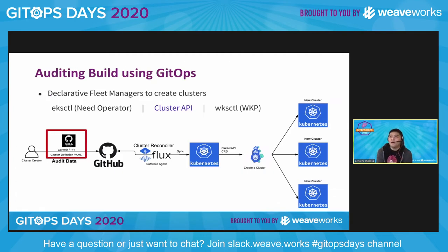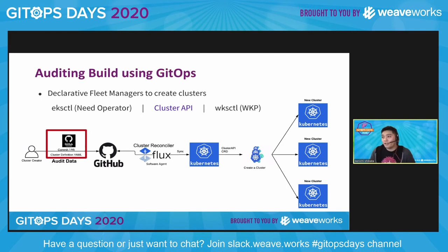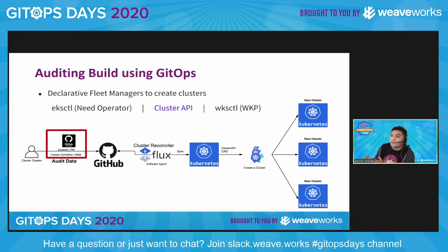Let's start with audit — specifically, let's audit the build. The build is the very base where we create the clusters. Imagine you have a bunch of clusters; we need to understand how those clusters are being created. Since we're in GitOps days, one of the things we want to discuss is the concept of creating clusters declaratively. Creating clusters declaratively has some really good advantages. One of those advantages is you can use a cluster reconciler in the middle, like Flux, take a bunch of cluster definition YAML files, apply them to a Kubernetes cluster, which then uses declarative fleet managers like Cluster API to create a cluster.